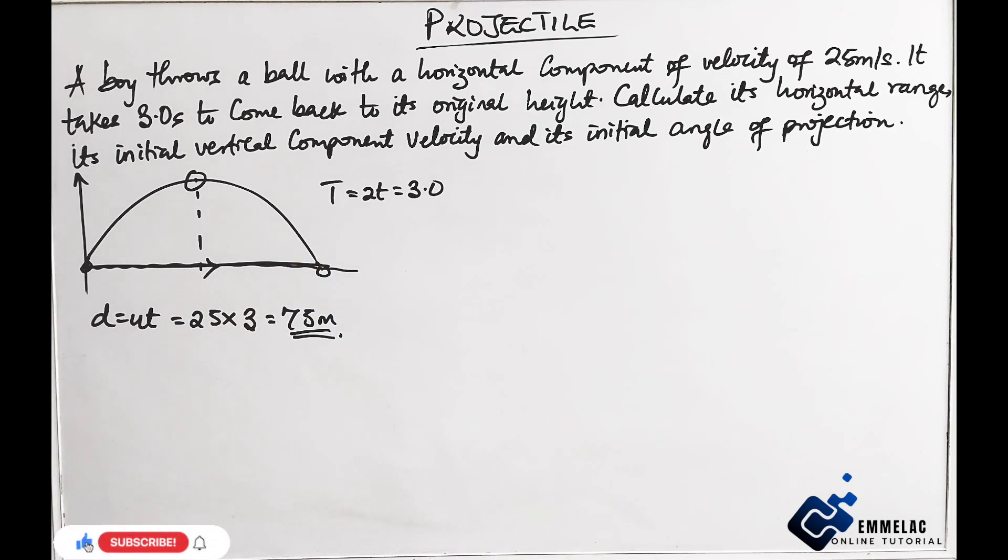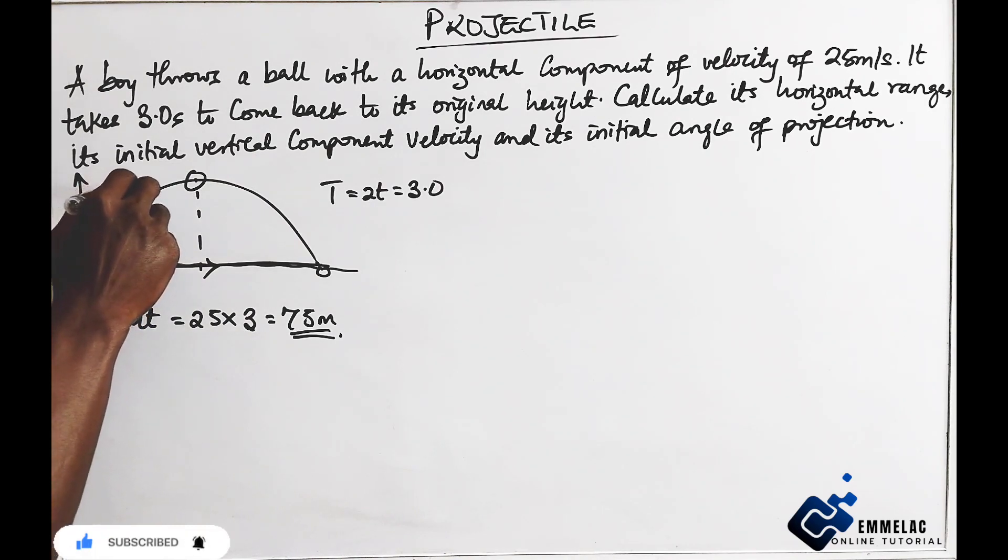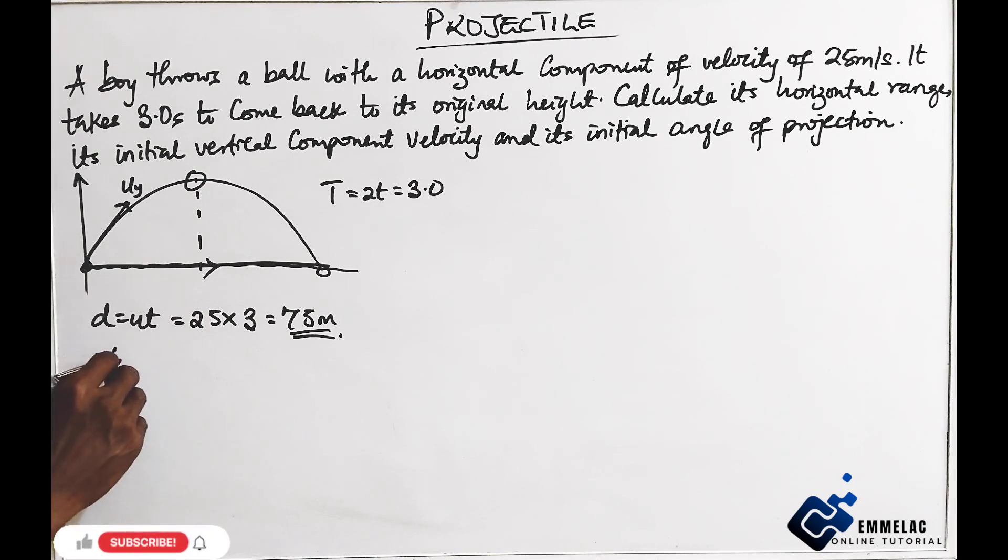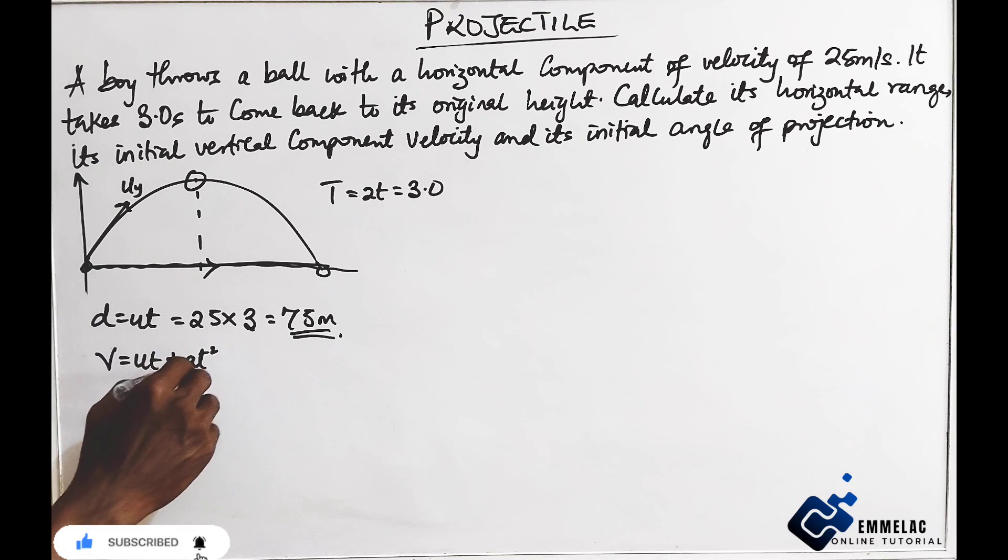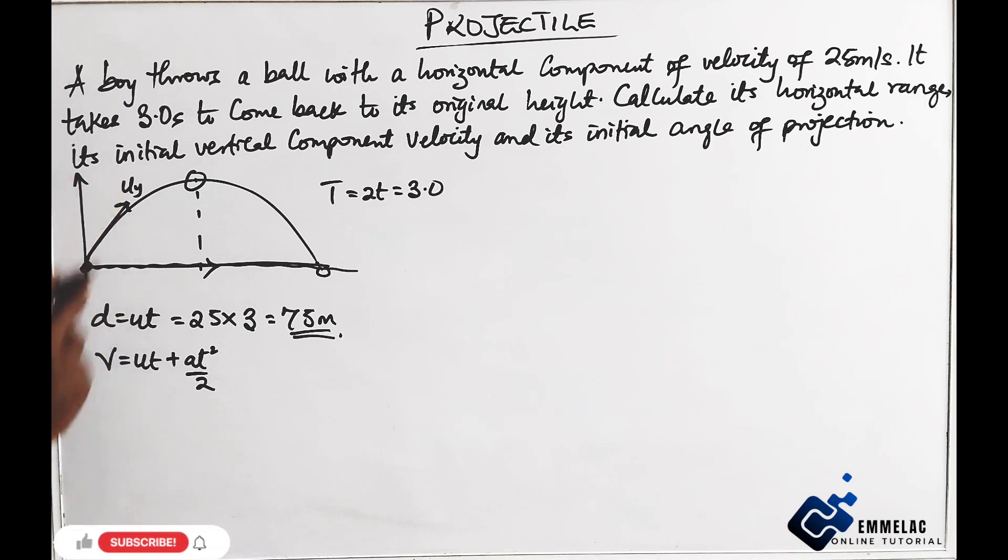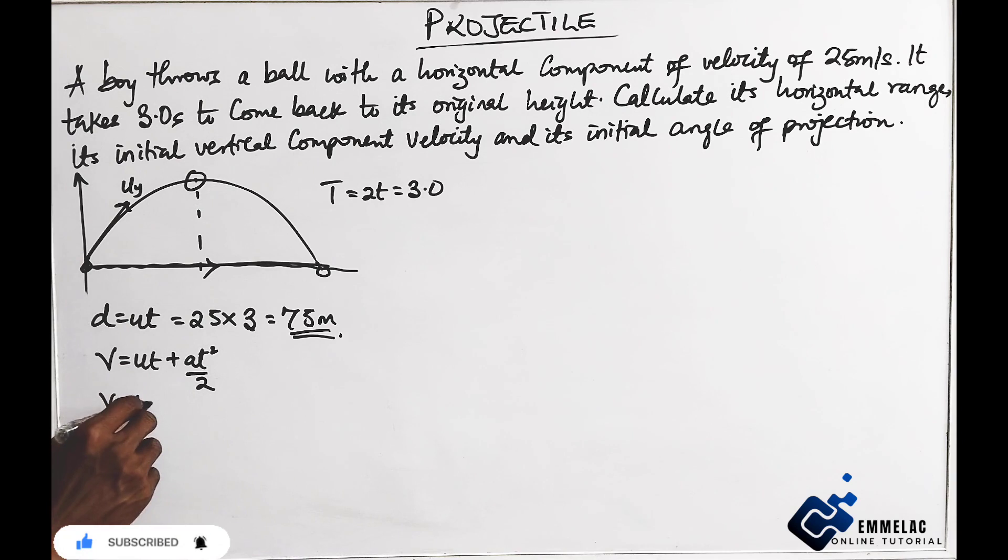Simple answer. Now we are told to find the initial vertical component velocity. Now at this point here, we have that V equals U minus GT. Take note, since it is the vertical component, our A becomes negative G.